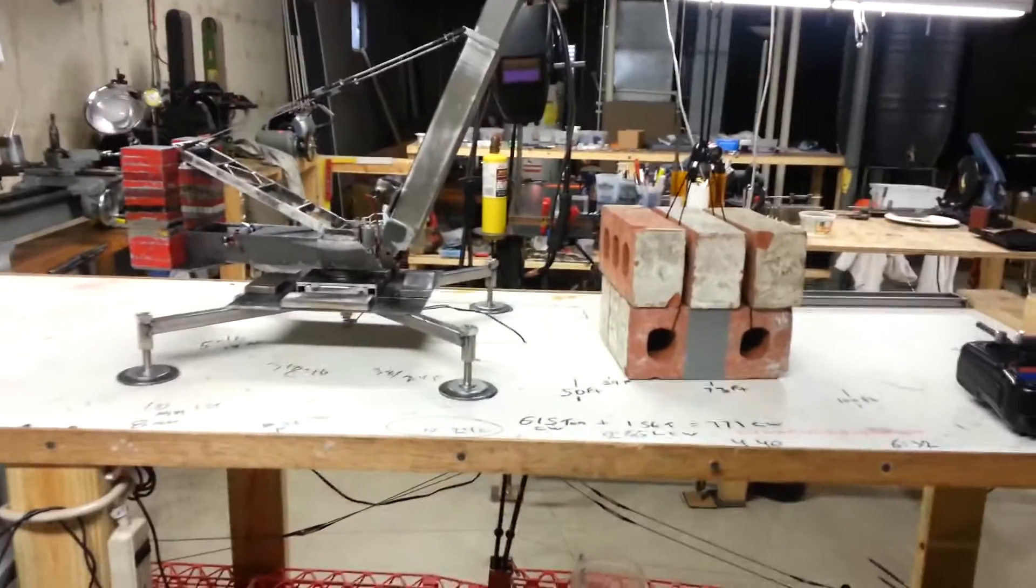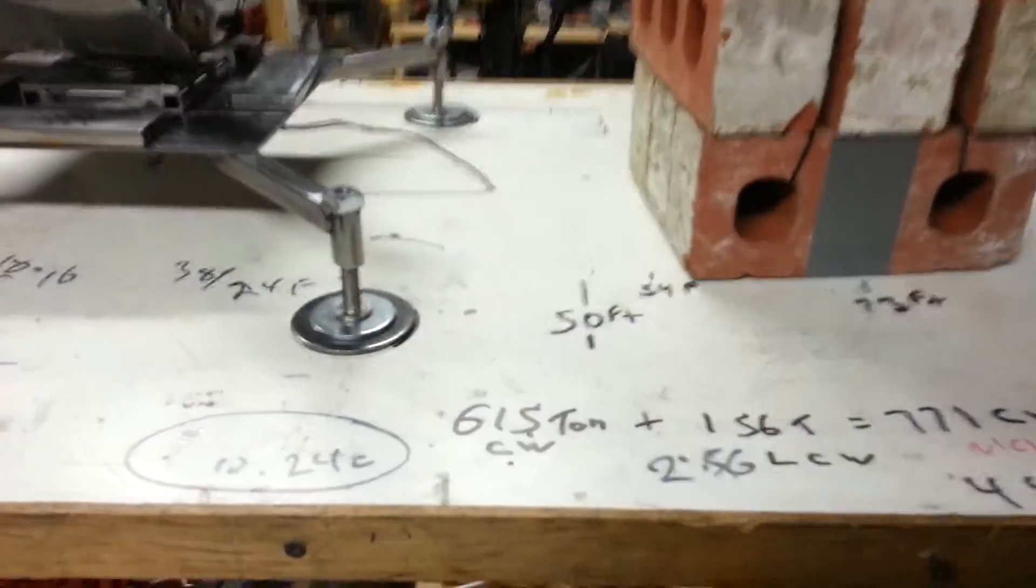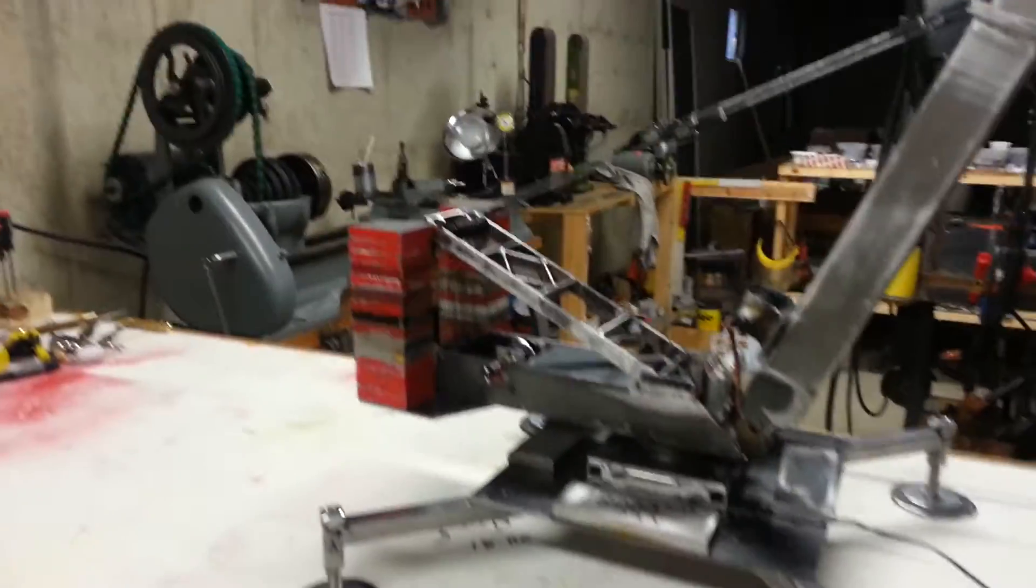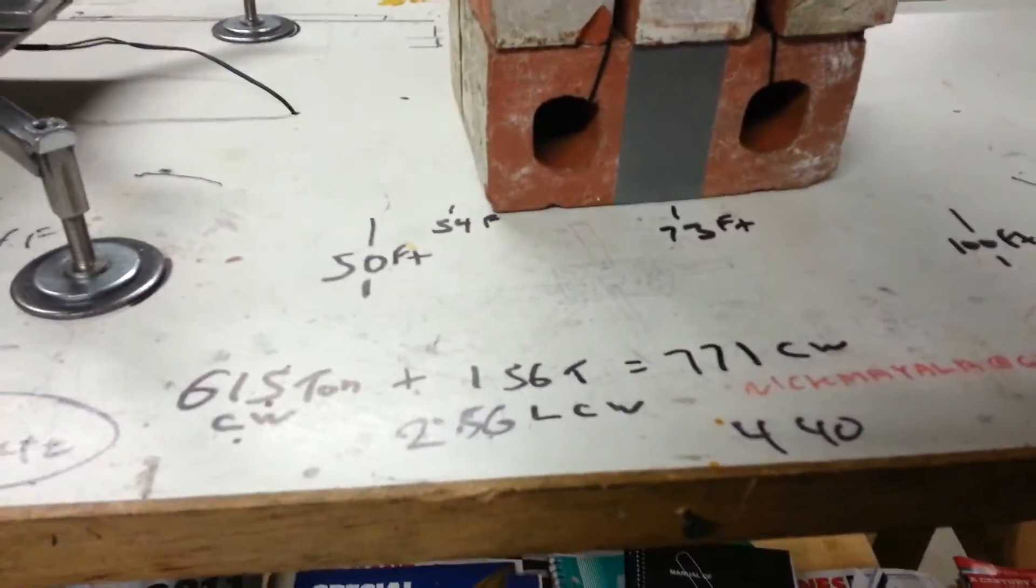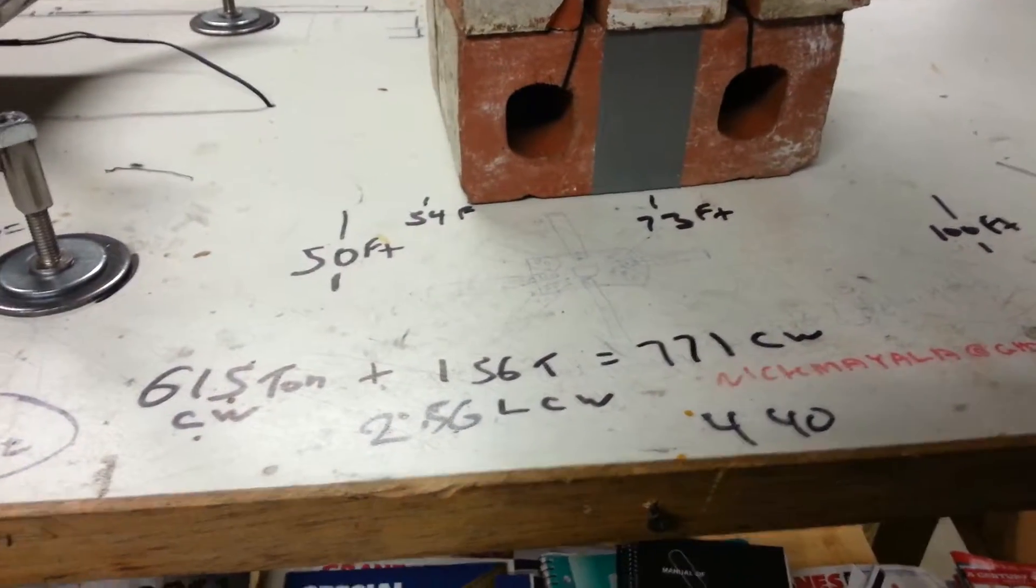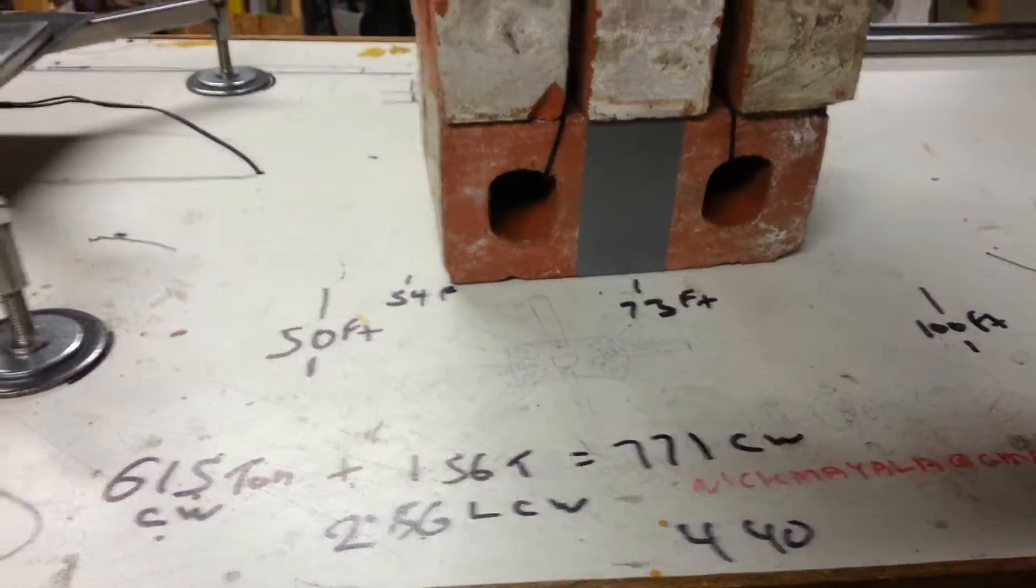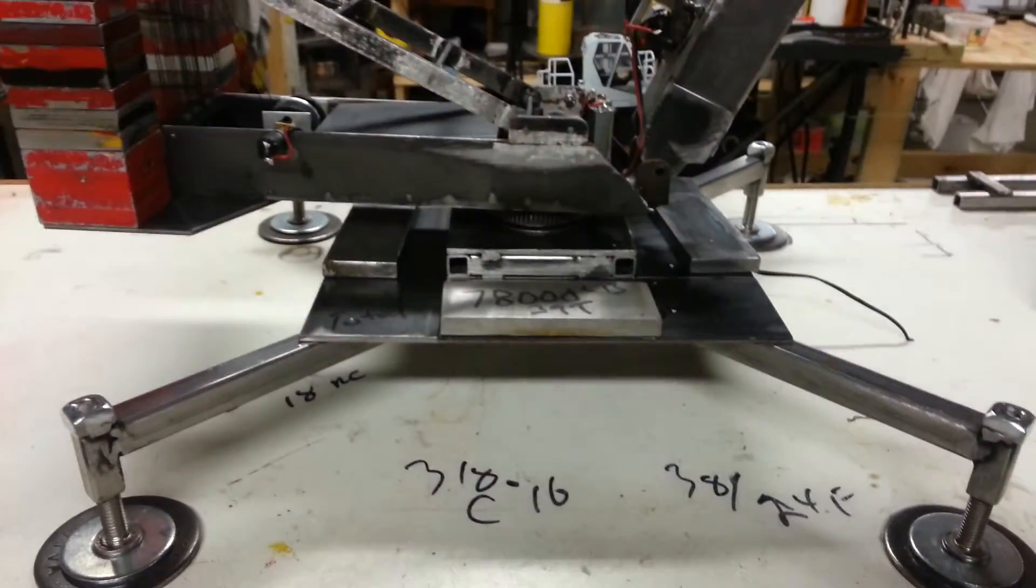A few quick things: we have 615 tons of counterweight on the upper, another 156 tons of counterweight on the lower to equal 771 tons, it's all in 1/50th scale.